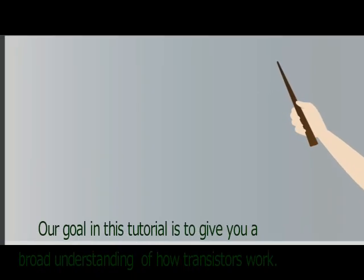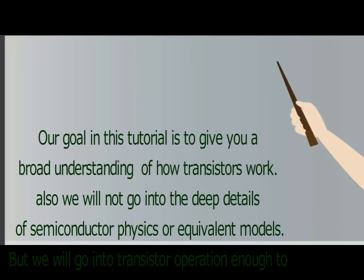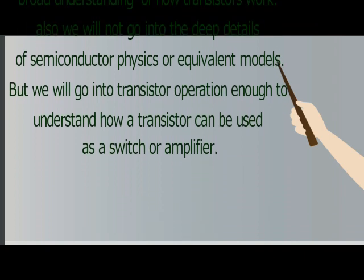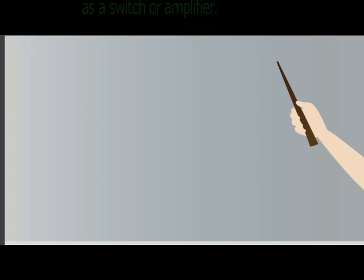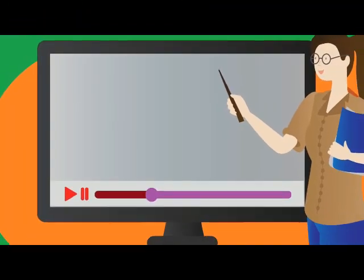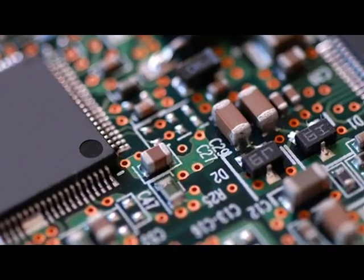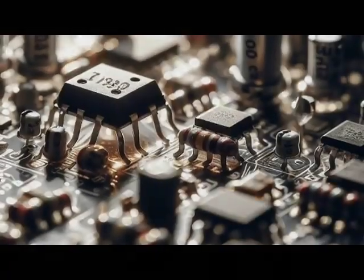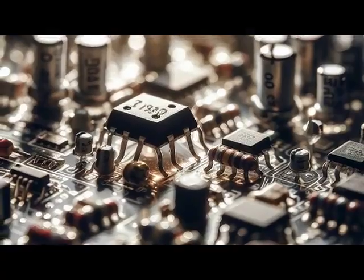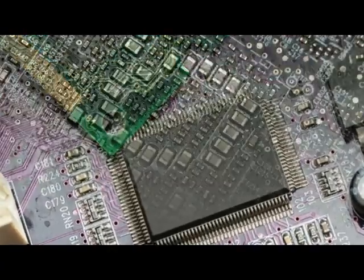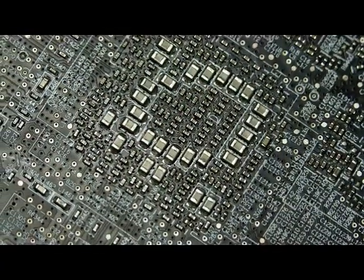Our goal in this tutorial is to give you a broad understanding of how transistors work. We will not go into the deep details of semiconductor basics or equivalent models, but we will go into transistor operation enough to understand how a transistor can be used as a switch or amplifier. Transistors surround the world of electronics; these components are used in almost every modern circuit as a critical control component. Sometimes these parts can be seen on electronic boards, but today they are often used in an integrated circuit (IC).